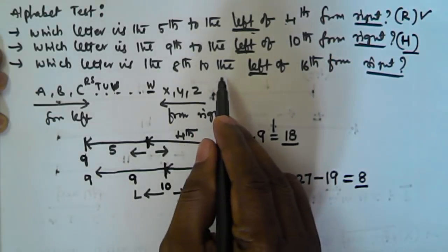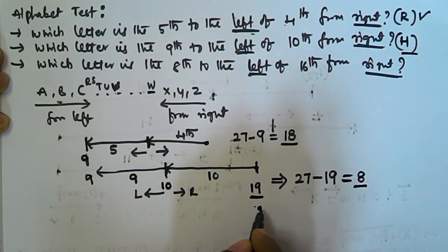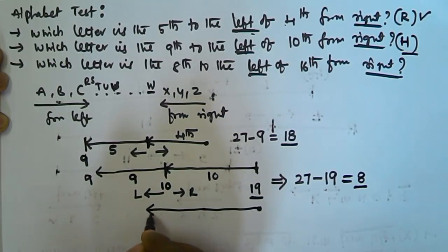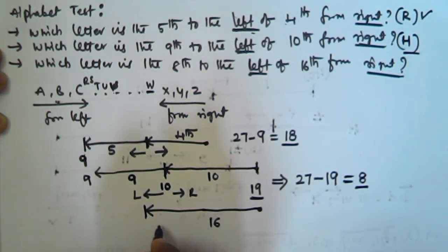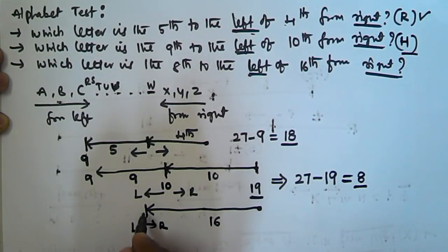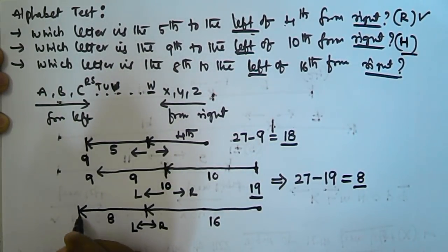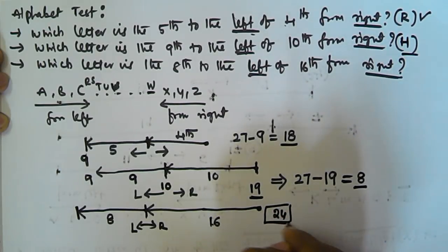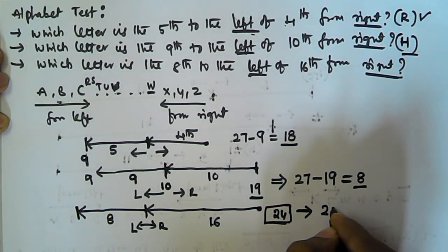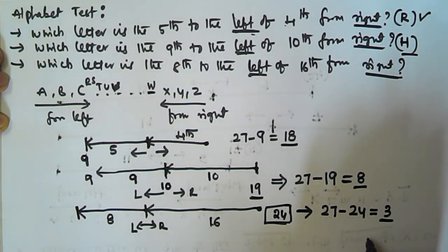Next: which letter is the eighth to the left of the sixteenth from the right? We start from Z and move sixteen positions to find the sixteenth letter. Then we move eight more positions to the left. Total positions from the right: sixteen plus eight equals twenty-four. To convert: 27 minus 24 equals 3. The third letter from the left is C.